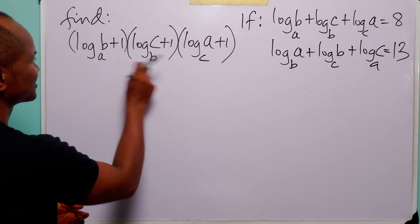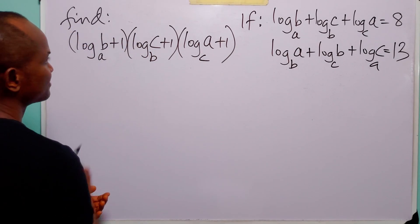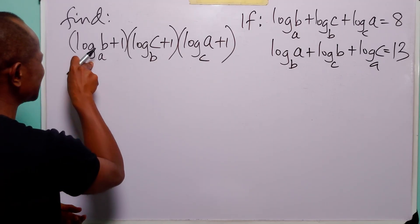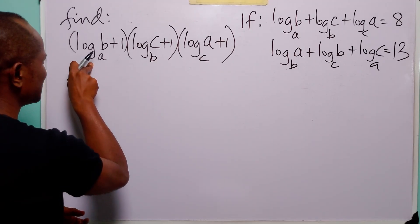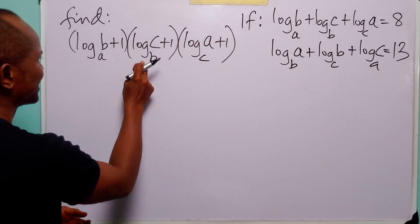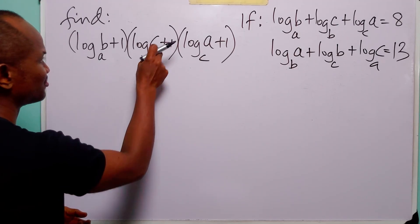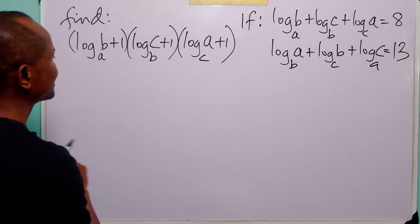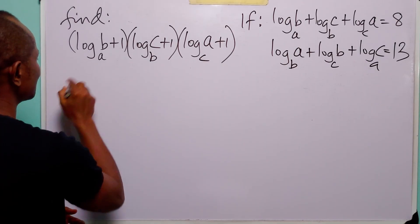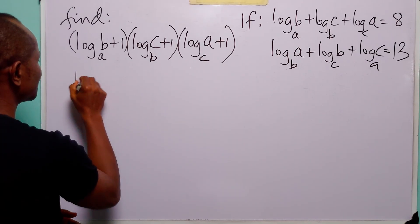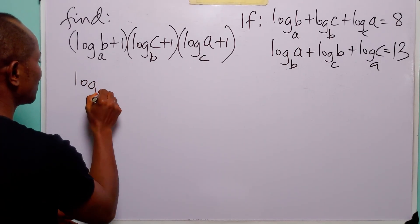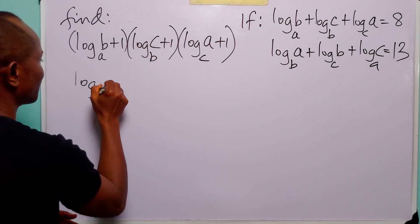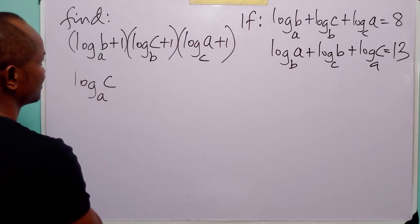Now let us expand this bracket. We have log to base a of b multiplied by log to base b of c. You will immediately see that this is going to be equal to log to base a of c.